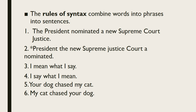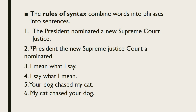For example, English is a subject-verb-object, or SVO, language. Sentence number one is grammatical because the words occur in the right order: 'The president nominated a new Supreme Court justice.' Sentence number two is ungrammatical because the word order is incorrect for English: 'President the new Supreme Justice Court a nominated.'